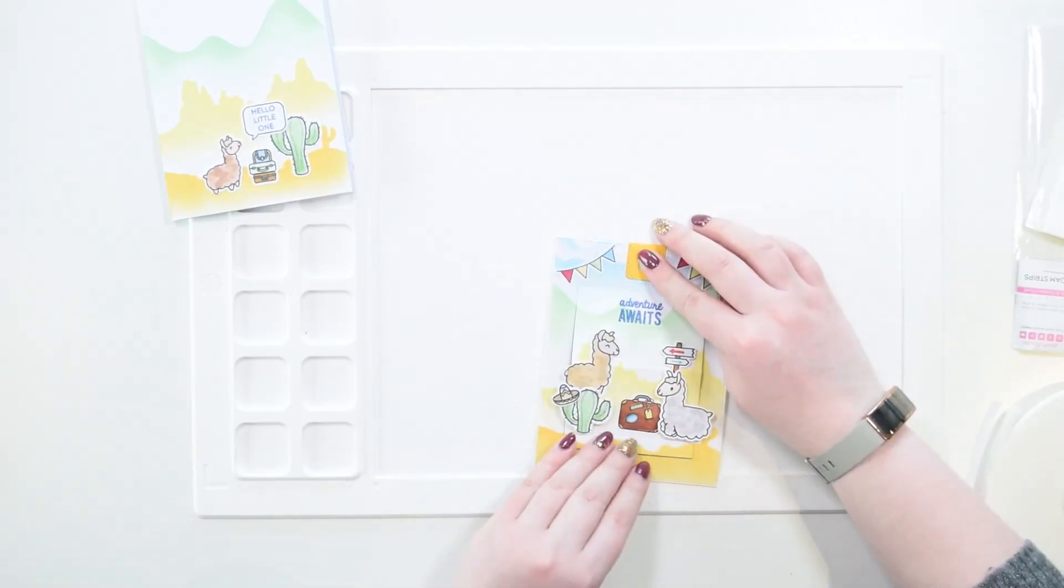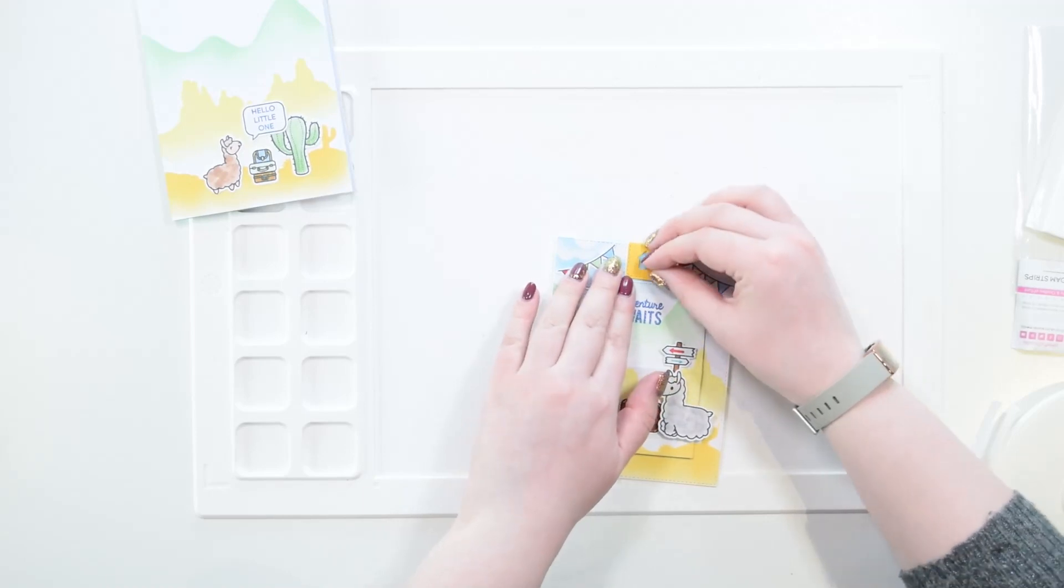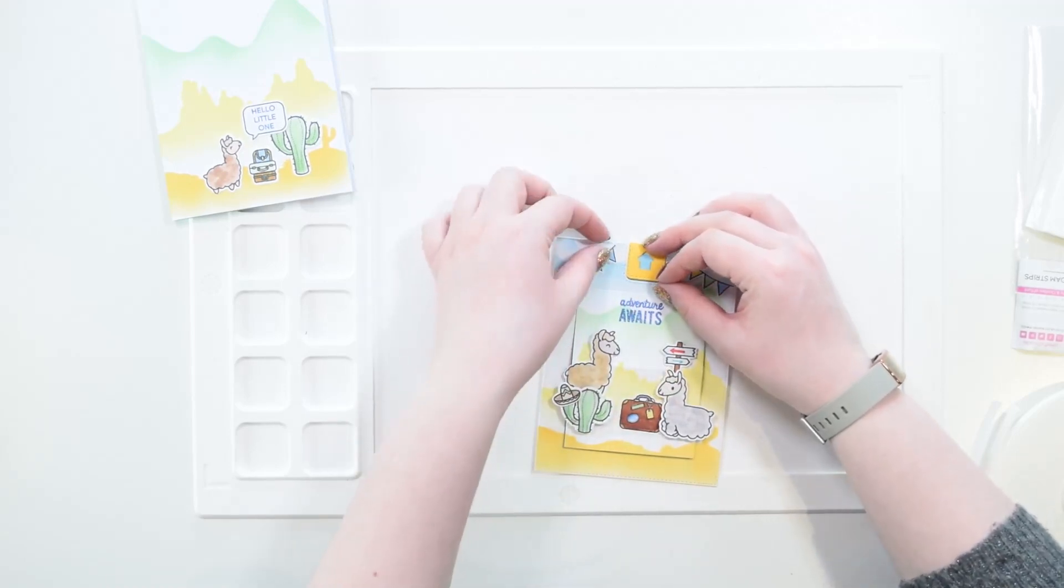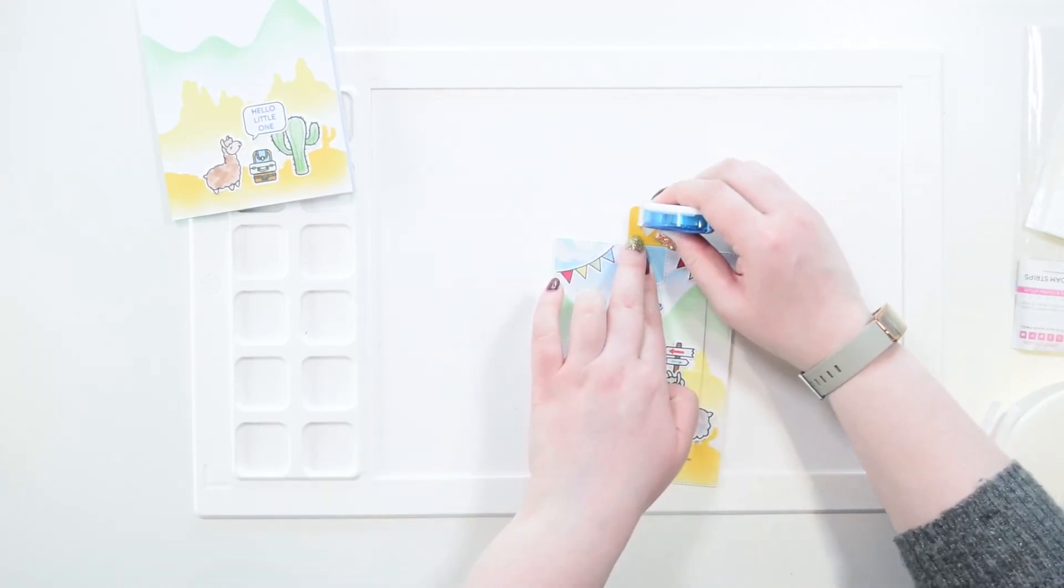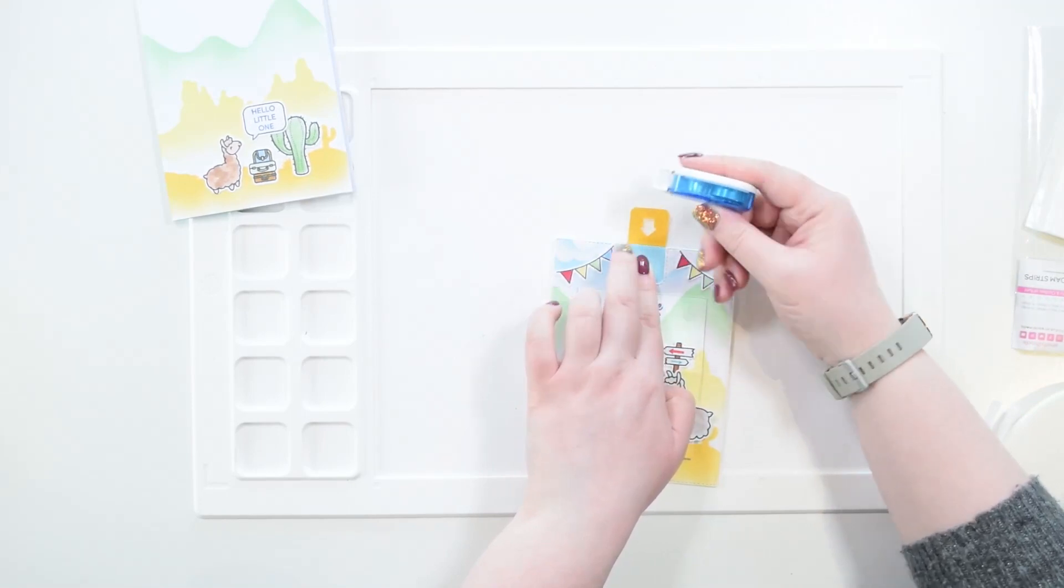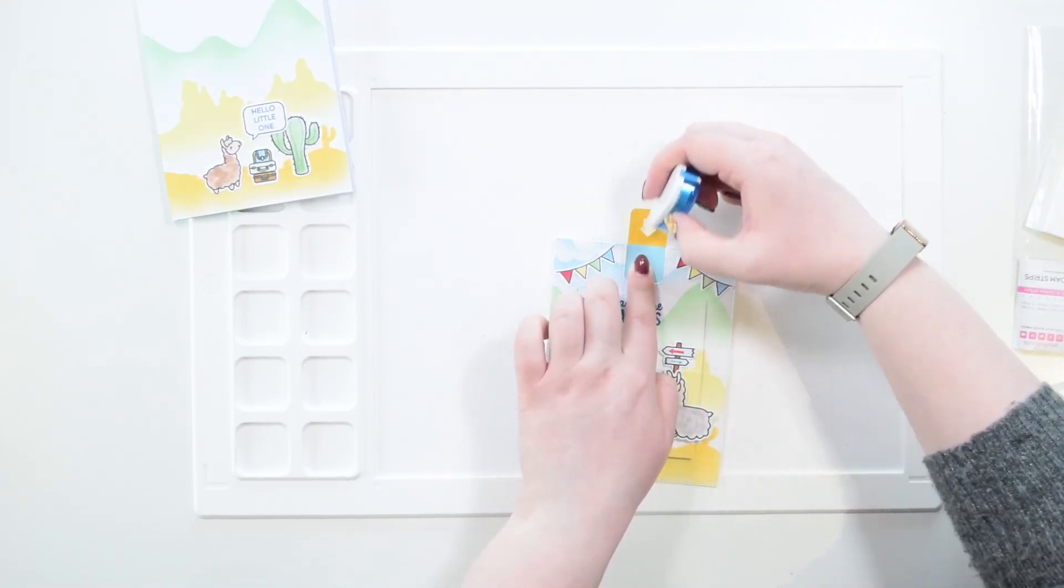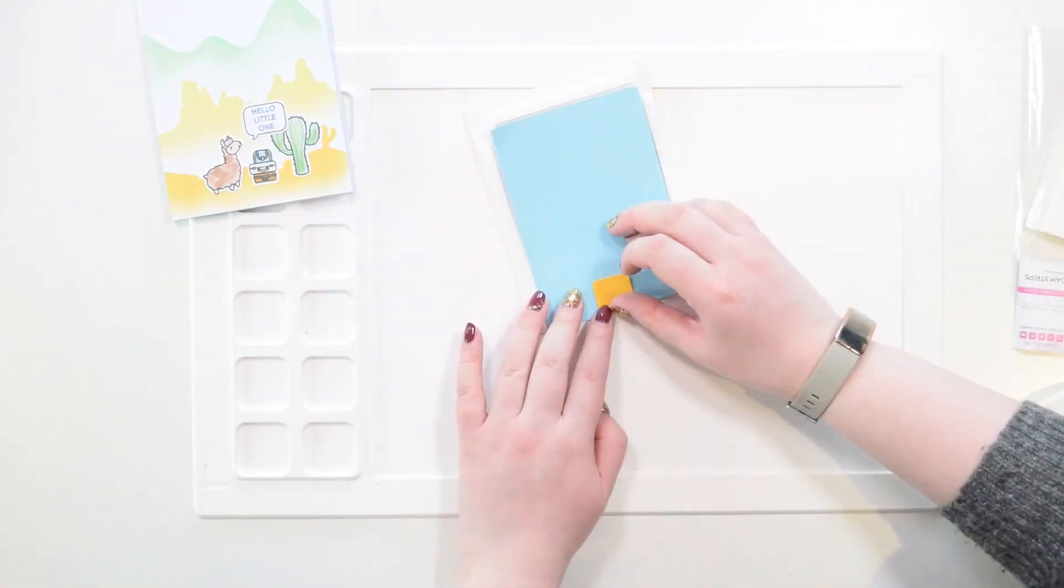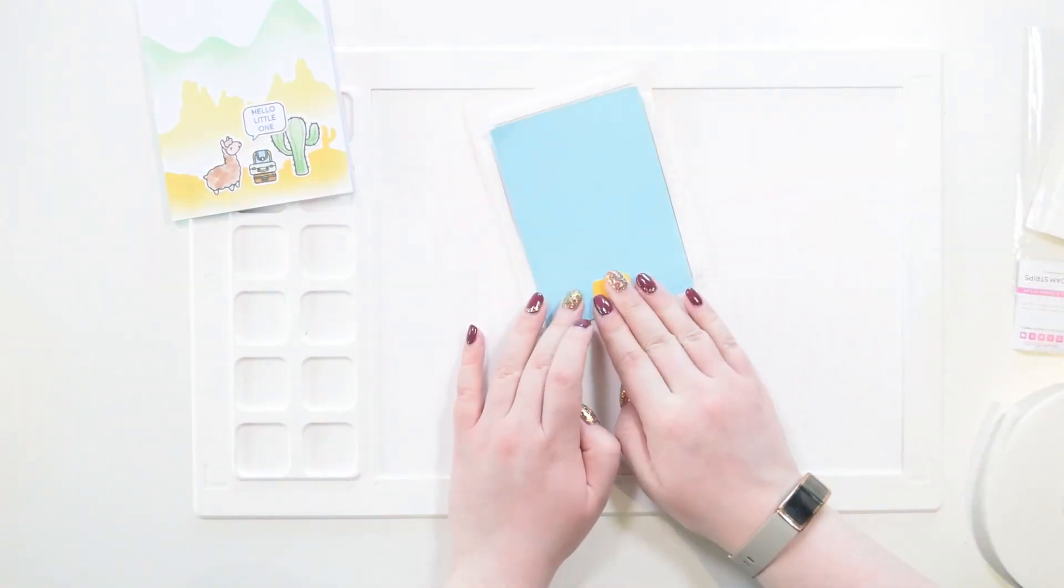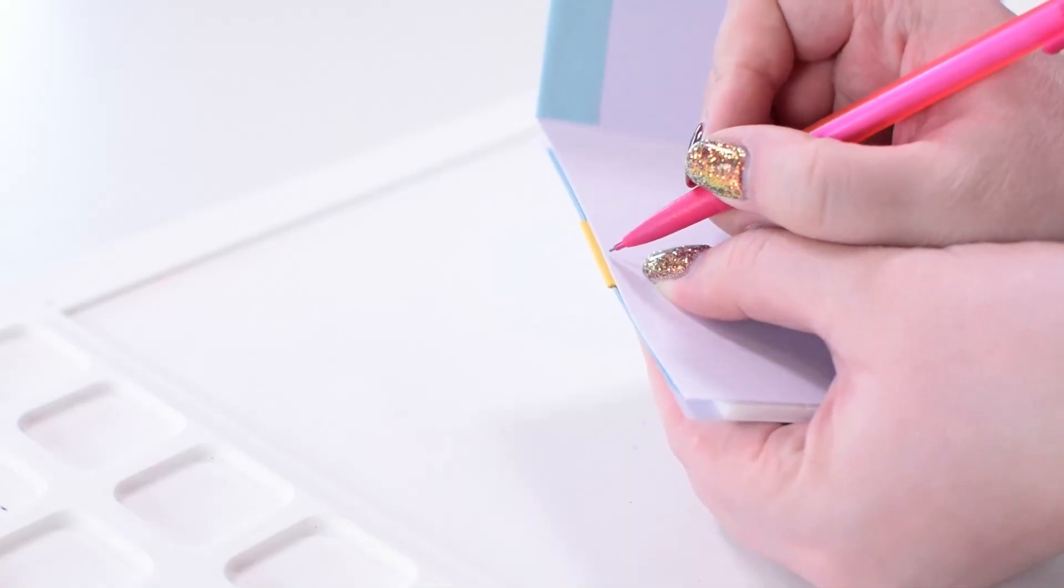So as you can see, it fits really really well and adds just a little extra something to this section. I'm adhering this with a tape runner because I really don't want to chance this moving with wet glue before it dries. I'm also doing the same to secure this back section of the tab.